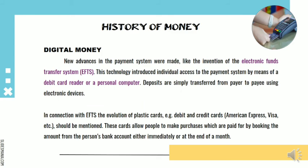Due to the development of computers and advanced telecommunication technologies, new advances in the payment system were made, like the invention of the electronic fund transfer system (EFTS). This technology introduced individual access to the payment system by means of a debit card reader or a personal computer, allowing deposits to be transferred electronically from payer to payee. In connection with EFTS, the evolution of plastic cards — such as debit and credit cards — should be mentioned, as these cards allow people to make purchases booked from their bank account either immediately or at the end of the month.